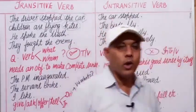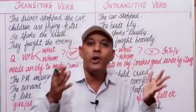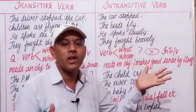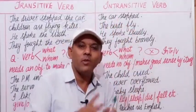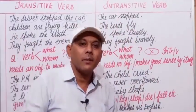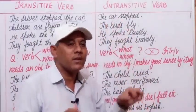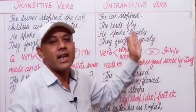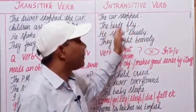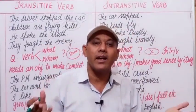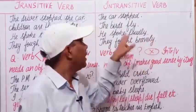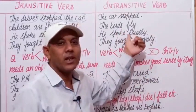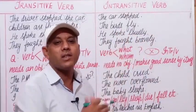Now let us look at sentences where we need no object to complete the sense. For example: 'The car stopped' — who made the car stop? We don't know, but we need no object to complete the sense. 'The birds fly' — we need no object to complete the sense because this sentence is complete by itself.